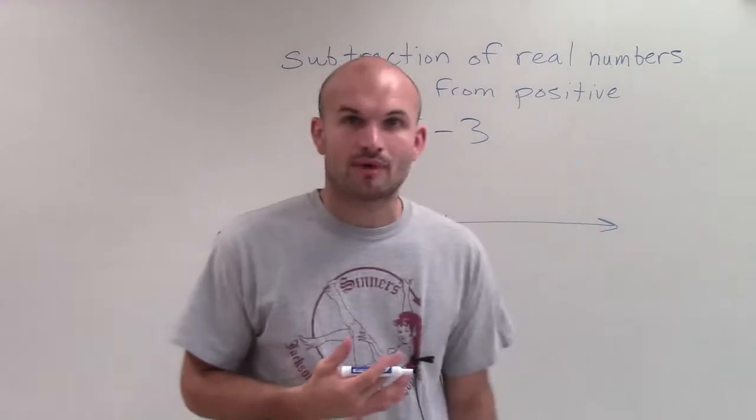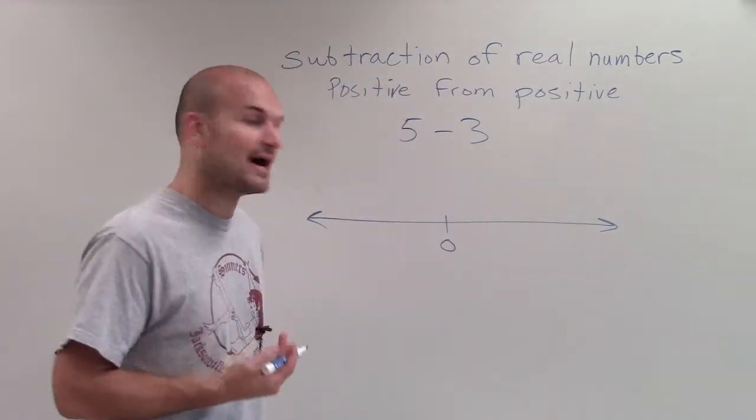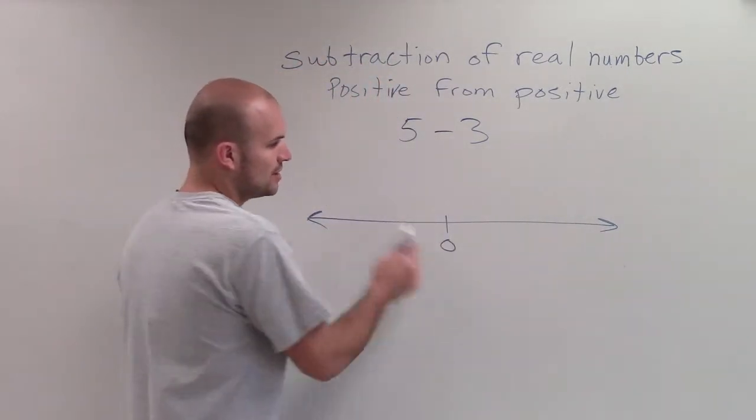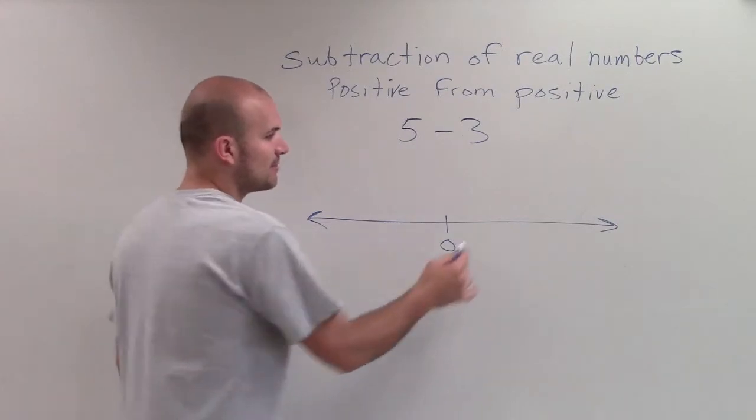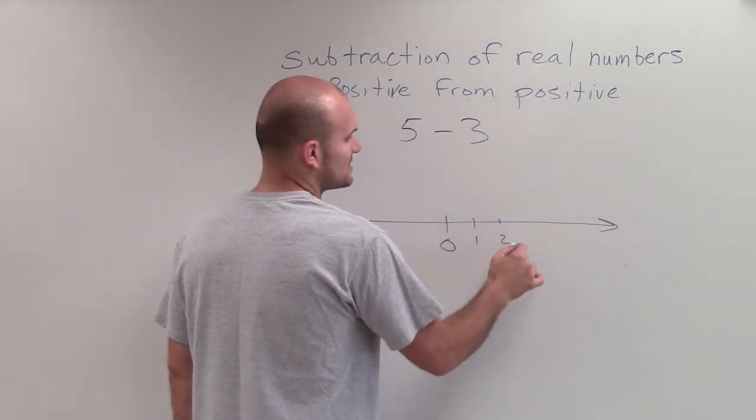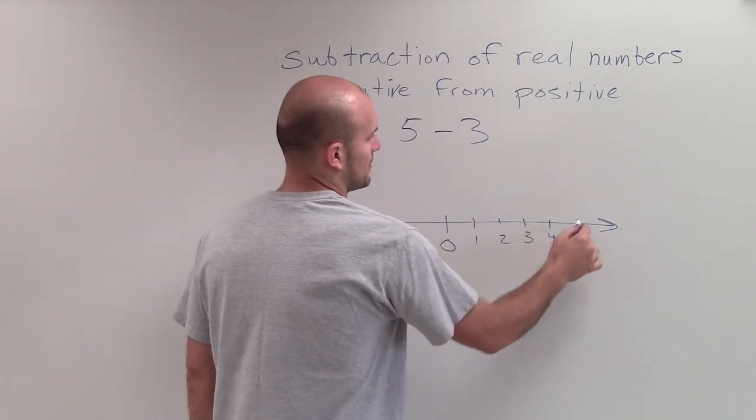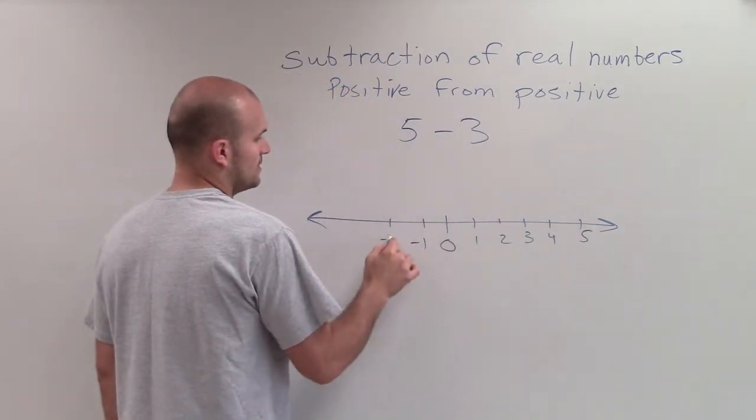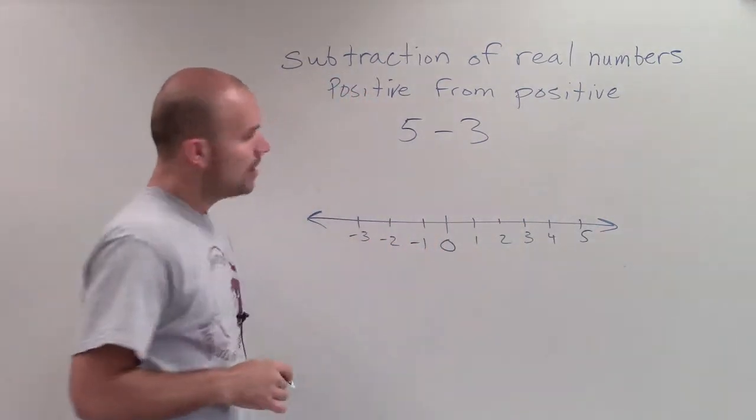I'm going to use the number line here to represent how to do subtraction of positive numbers. So here we have a number line, and we're just going to represent our numbers: 5, negative 1, negative 2, negative 3.